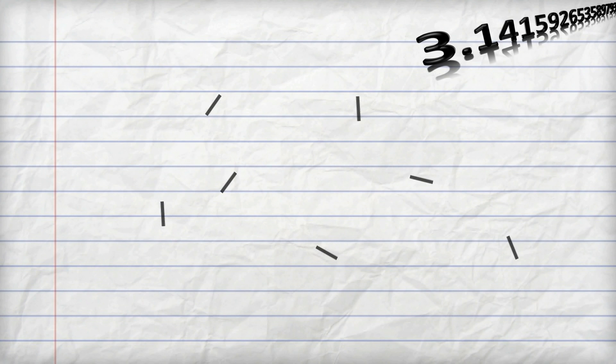And then you just randomly drop them on, in this case, the piece of paper. And you then work out twice the number of sticks that are dropped and divide by the number that cross the line. And as you do this with more and more sticks, you get closer and closer to pi.